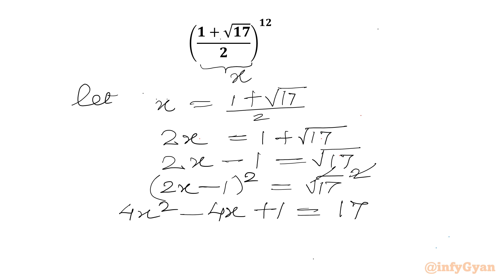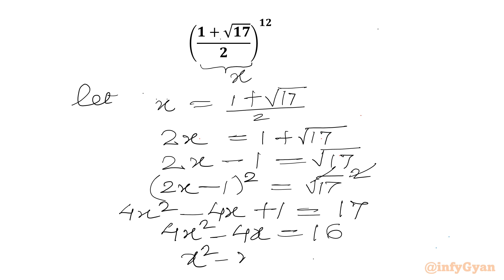Now subtract 1 from both sides, so 4x square minus 4x will be equal to 17 minus 1, which is 16. The equation is divisible by 4, so we can write x square minus x equal to 4, or equivalently x square will be equal to x plus 4.